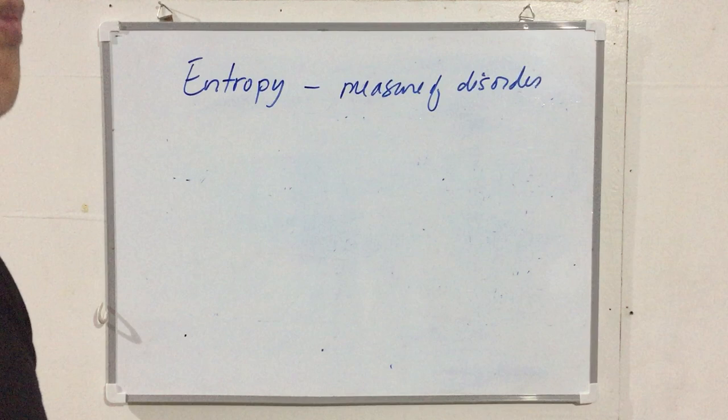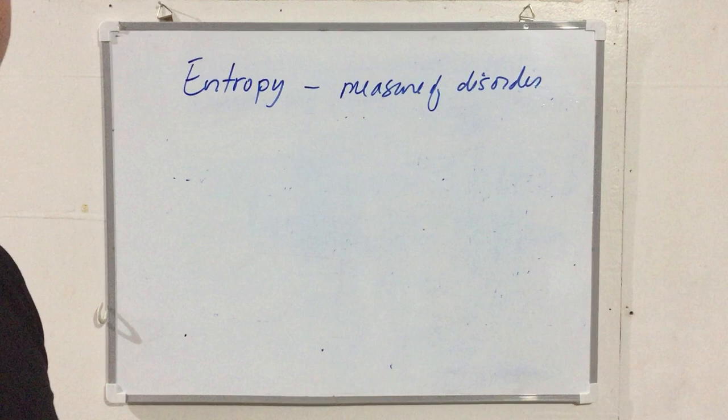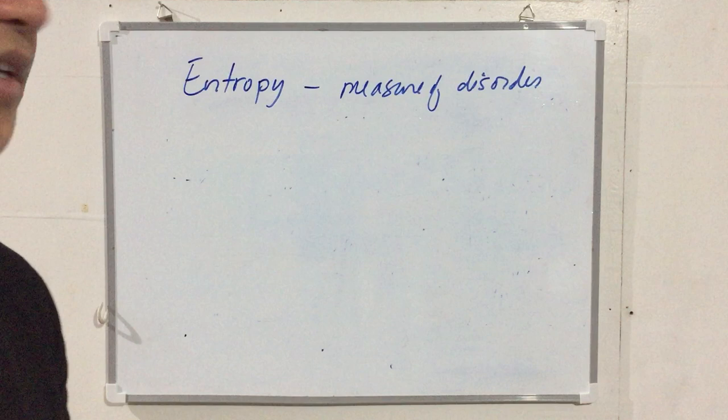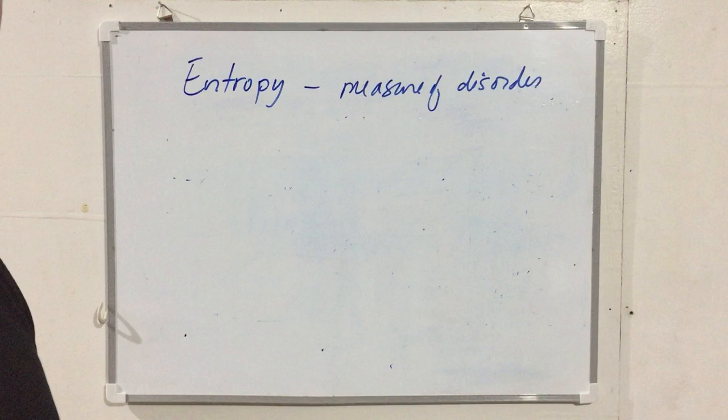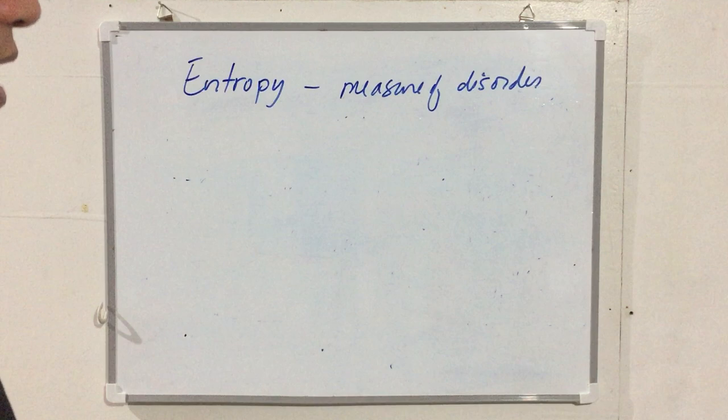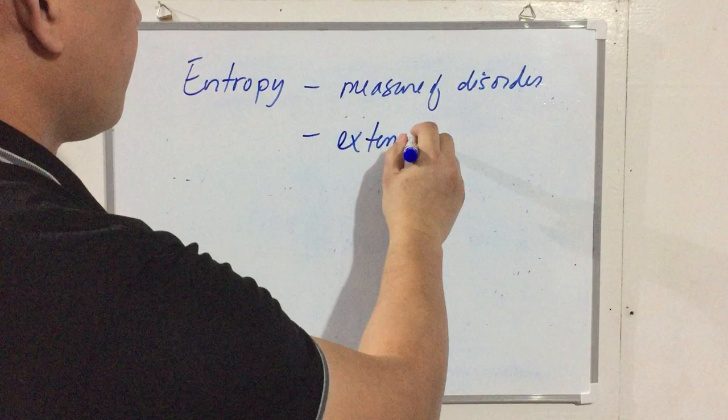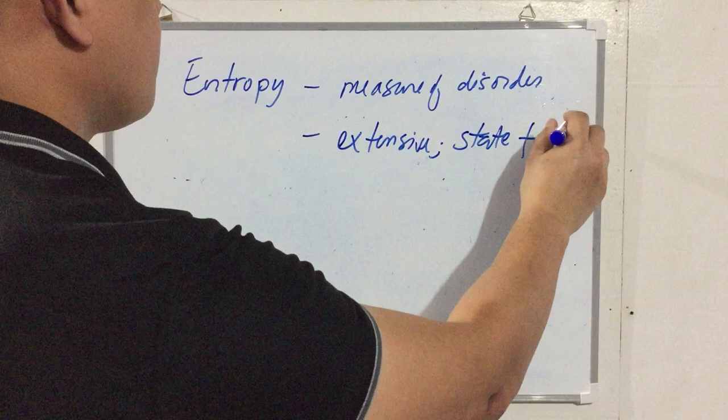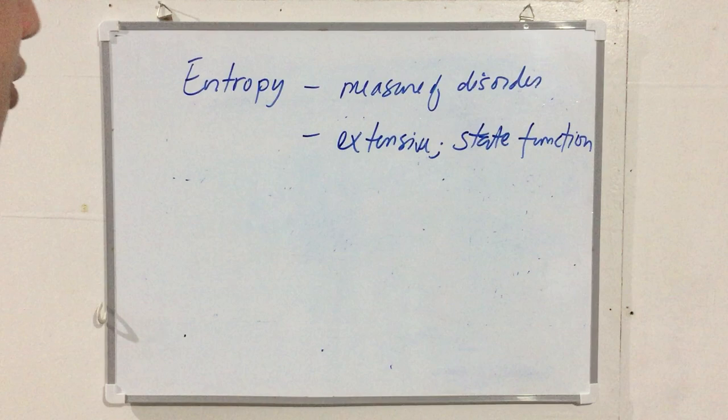Entropy is extensive — the bigger and more massive the system, the more accessible states there are, and therefore the higher the entropy. Like internal energy and enthalpy, entropy is also a state function and extensive. For simplicity, let's say entropy is proportional to the amount of disorder: more disorder means more entropy.